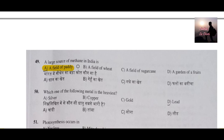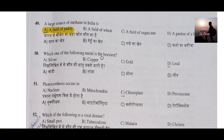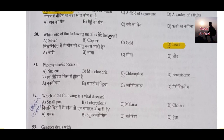Question number 50: Which one of the following metals is heaviest — silver, gold, copper, or lead? The answer is lead, the heaviest among the given options. Note: among the options given here it is lead, but the naturally occurring heaviest element from Question 41 is uranium — don't get confused. Question number 51: Photosynthesis occurs in — the correct answer is chloroplast.